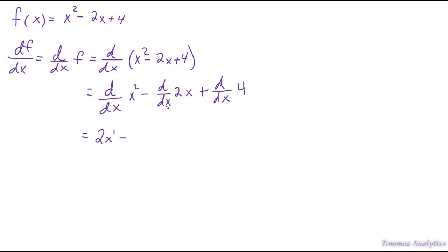For this term, we have a constant 2 multiplied by the variable x, so we use the constant multiple rule. The way we use that rule is we pull the 2 out and then multiply by the derivative of x. Going further, we want the derivative of 4. Now 4 is a constant, and the derivative of a constant is 0, so we can just write 0.